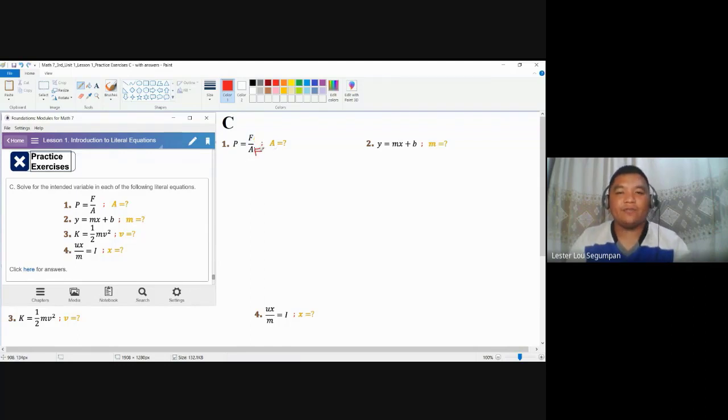You might say I could divide both sides by F, remove that, and get P over F equals A. Then apply symmetric property: A equals P over F. You might do this, but I'm going to caution you - this is an incorrect process. Why? Because when you look at the given, A is found at the denominator of a rational expression.